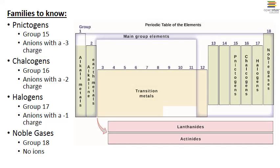The halogens are in column 17. And these elements all form anions with a minus 1 charge.